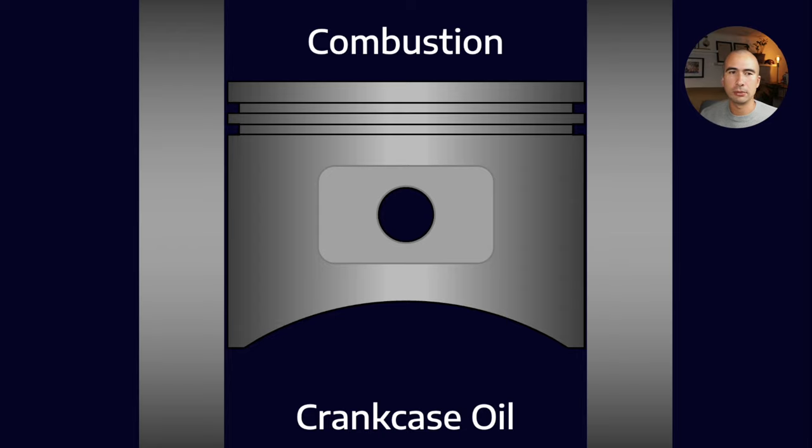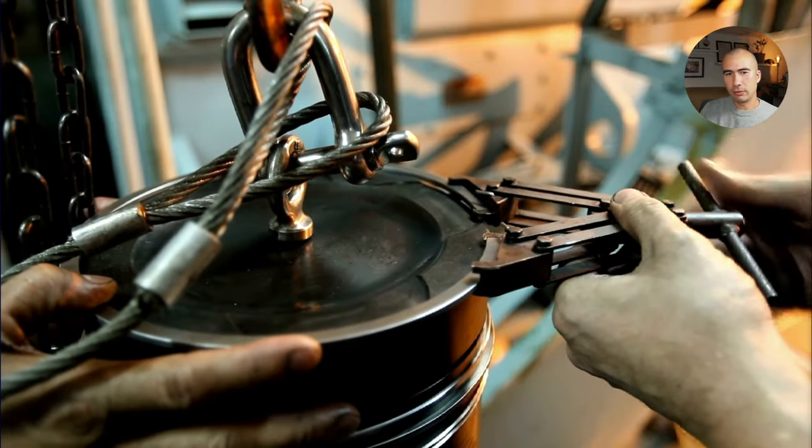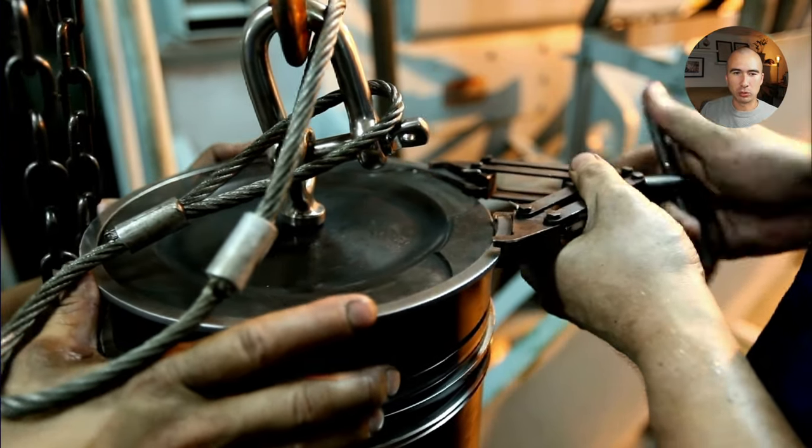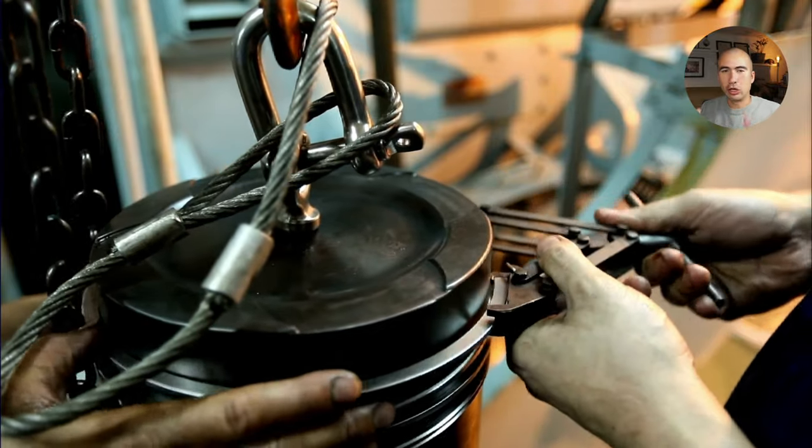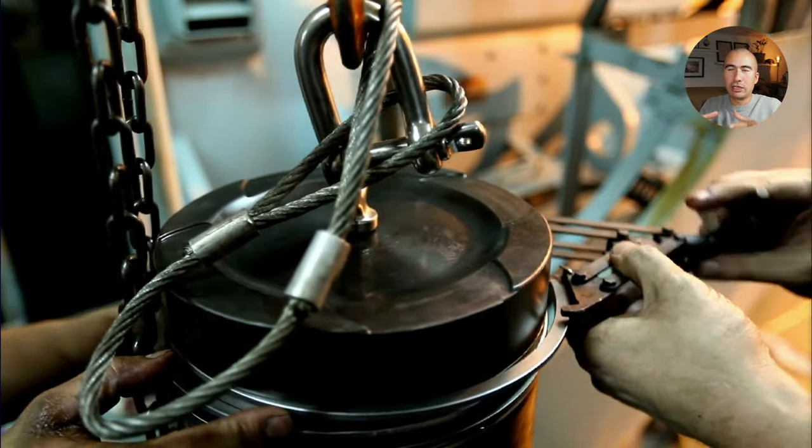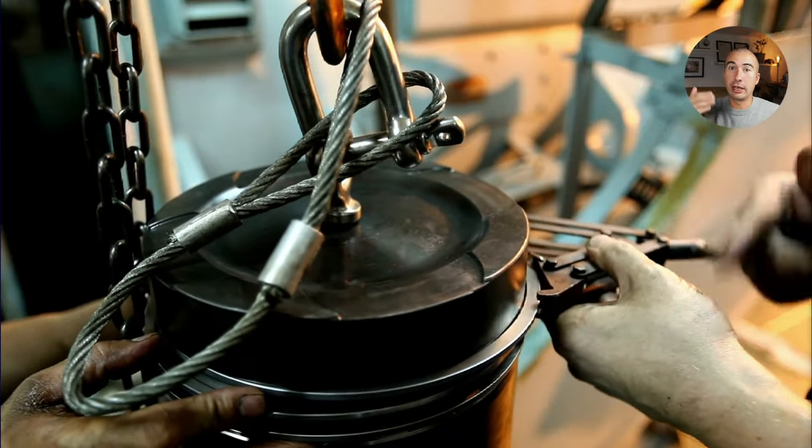The top ring is the combustion ring and it helps seal combustion gases from getting inside the crankcase, which is called blow-by. These rings are actually pretty difficult to get on—you need special tooling to get them over the top land. Once they get in there, they're able to press up against the wall of the cylinder liner and form that seal.